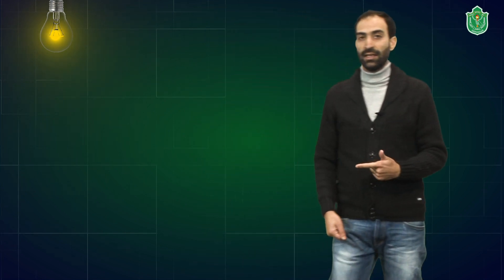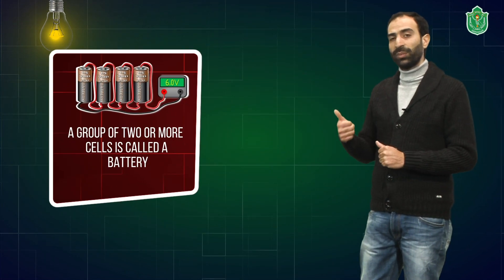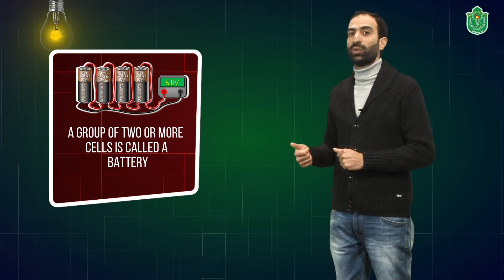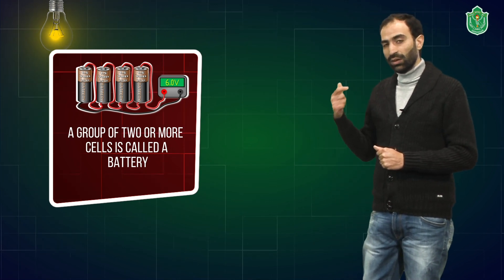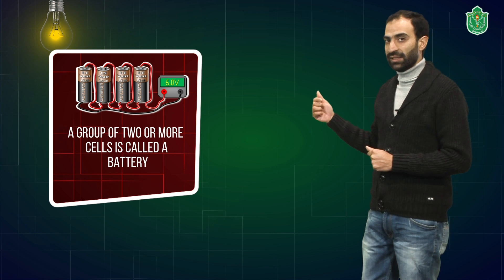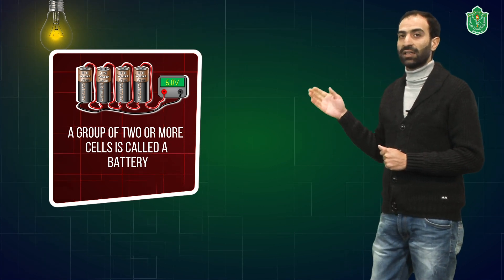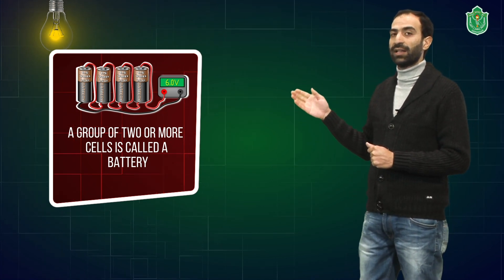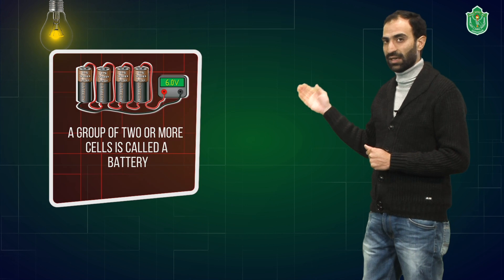Sometimes we need to connect more than one cell in order to make our appliance run. A group of cells is known as a battery. Always in a battery, the cells are to be connected in a proper way to get a continuous and regular flow of electric current.